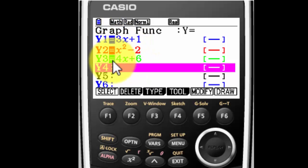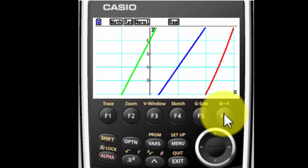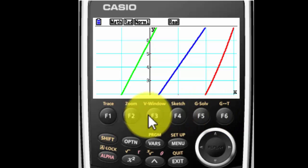You notice all three of these are highlighted. The equal signs are highlighted. That means they're all active. I can press Draw and there's my three lines. Not exactly what I wanted to see.